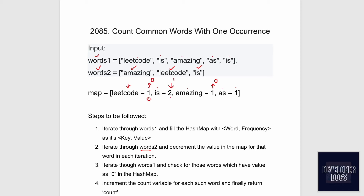After iterating through words two, the updated map values are: 'leetcode' contains zero, 'is' now contains one, 'amazing' contains zero, and 'as' has one. The answer is the count of zeros in the map — 'leetcode' and 'amazing' are the two words appearing exactly once in both arrays. 'Is' appears twice in words one so it does not qualify and can be ignored.